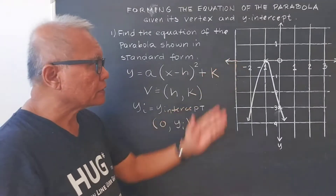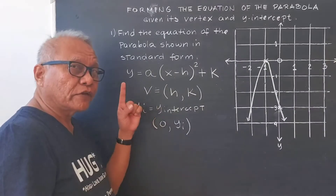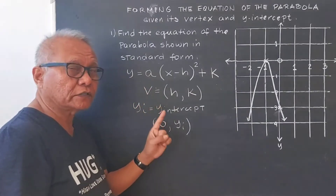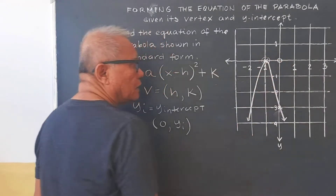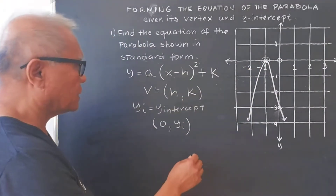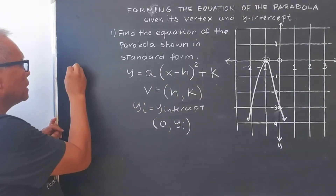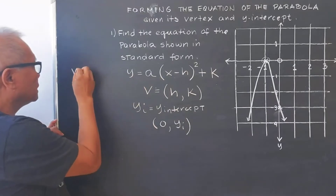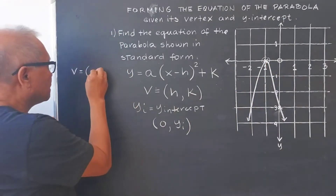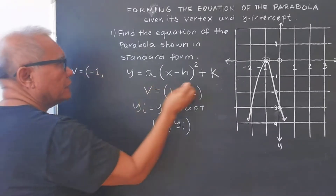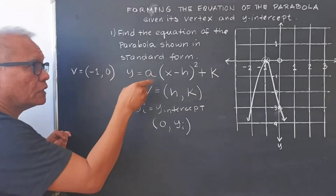Now in our graph here, let us find the coordinates of the critical points — the vertex coordinates and y-intercept coordinates. So let's find the vertex. Our vertex is right here. The vertex coordinates: x is negative 1, and y is 0. So we have negative 1, 0 as the coordinates of our vertex.